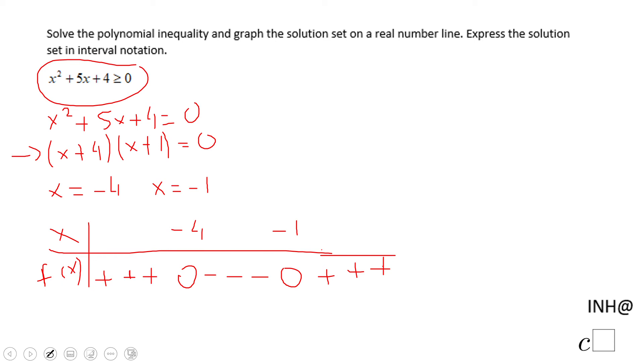And now if we look back to our original problem, when this polynomial, this quadratic is greater or equal to zero, we see that in the table: negative infinity, negative four bracket here because we have the equal, union negative one, infinity. This is the solution set for this polynomial inequality.